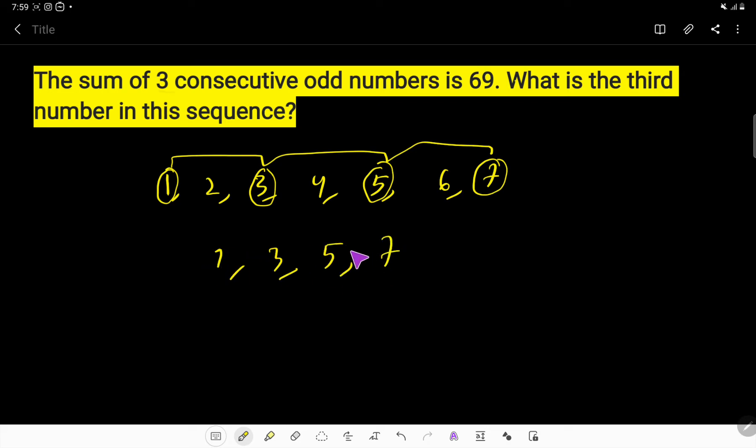Look, the consecutive odd numbers - the difference between two consecutive odd numbers is two. Three minus one is two, five minus three is two, seven minus five is two, right?